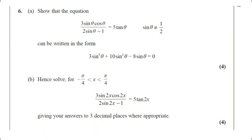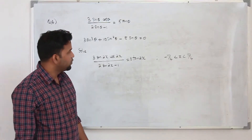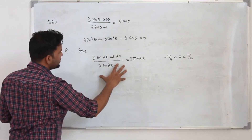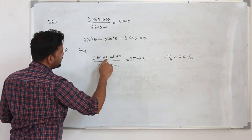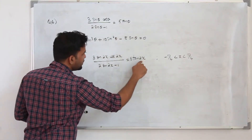Part B: Hence solve for −π/4 < x < π/4 the equation 3 sin 2x cos 2x divided by (2 sin 2x − 1) equals 5 tan 2x. Give your answer to 3 decimal places. The question carries 4 marks. When you compare this with Part A, it's the same equation — instead of θ you have 2x.